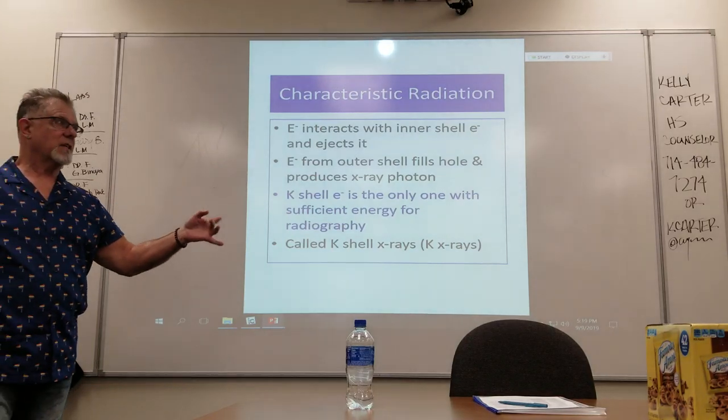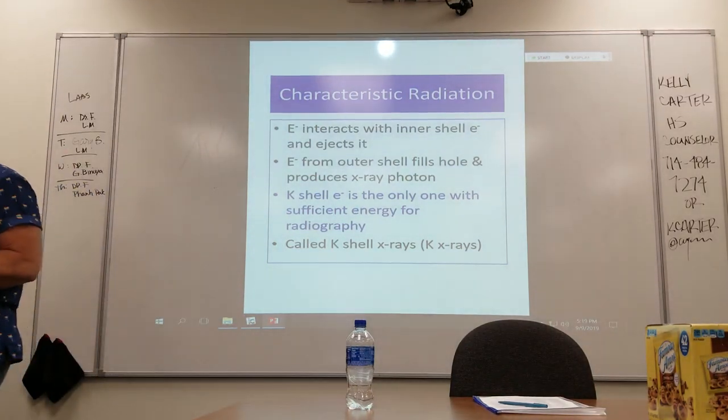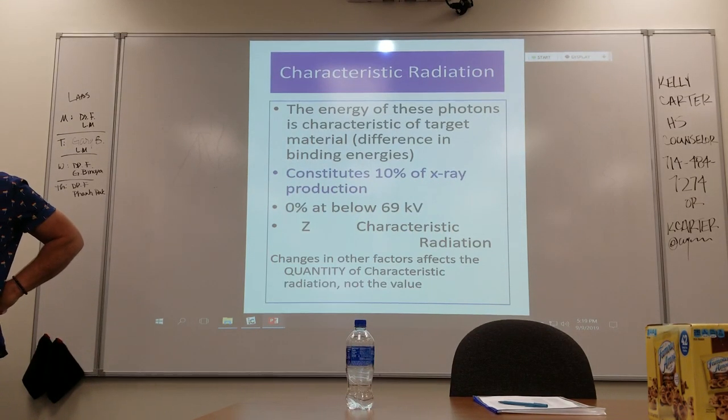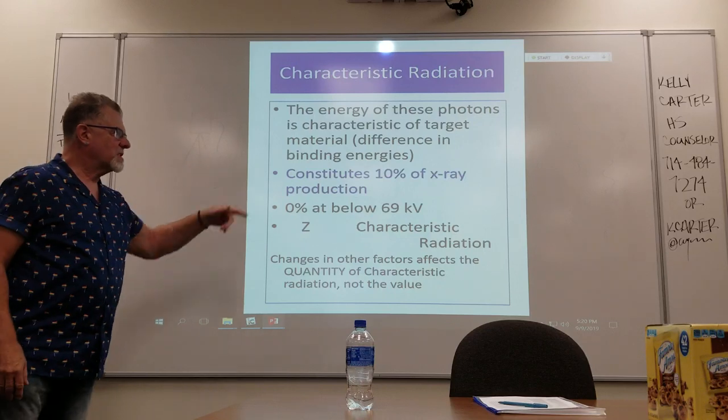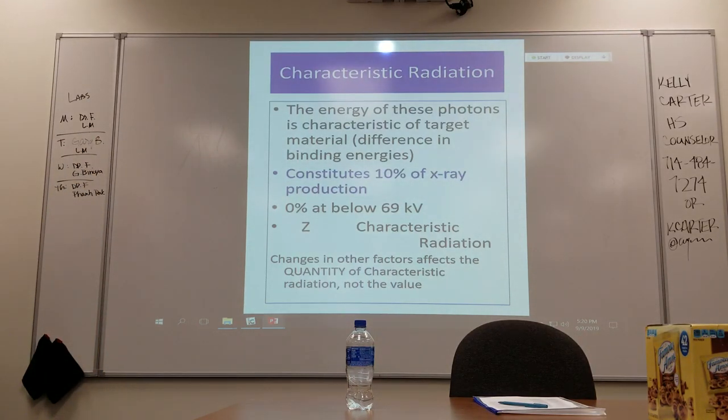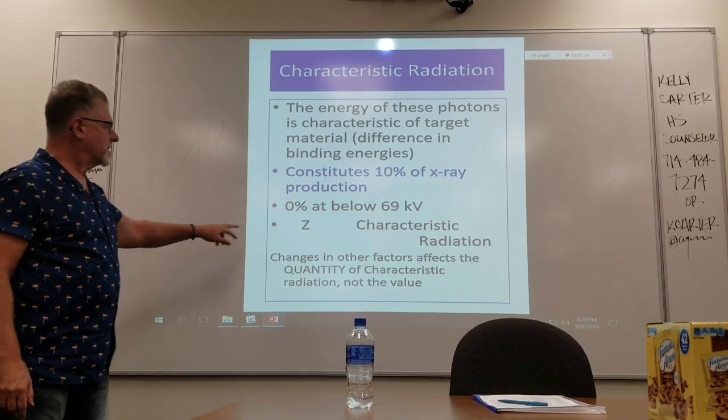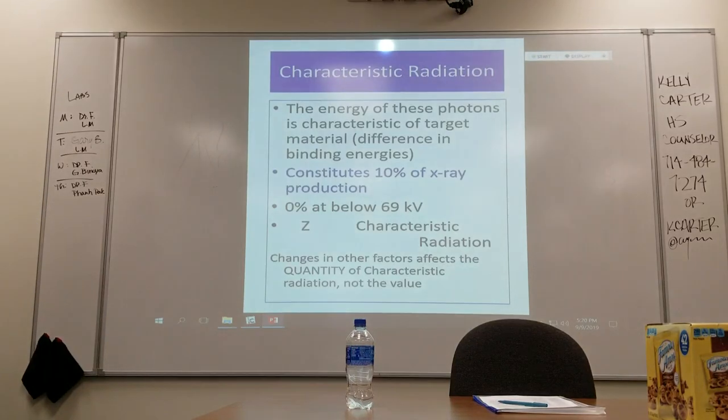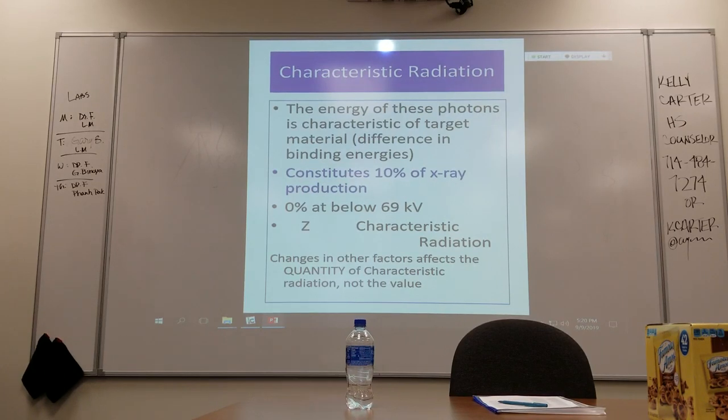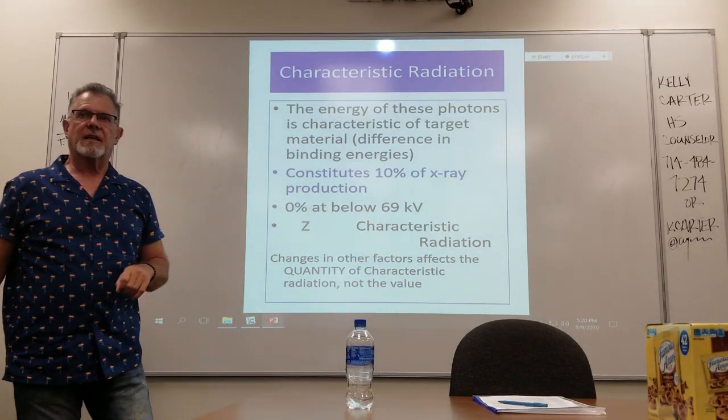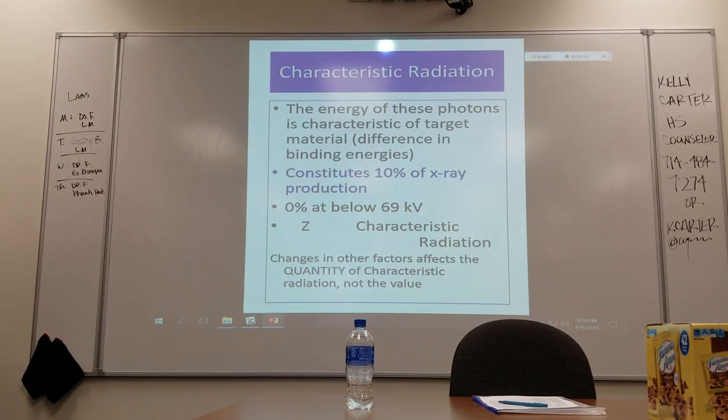The energy is characteristic of the target material. It's due to the difference in binding energy. Radiation is about 10% of the X-ray production for the X-ray tubes that we use that are tungsten base. You will not get any characteristic below 69 kV because that's the binding energy, the highest binding energy of the K shell for tungsten. At 68 you're not going to get anything, you have to be 69 or above. Changes in other factors will affect the quantity of characteristic radiation but not the value. This is a fingerprint, it's an identification.